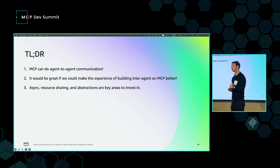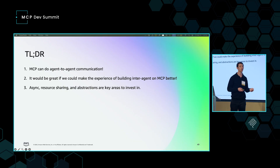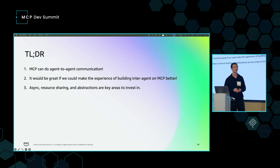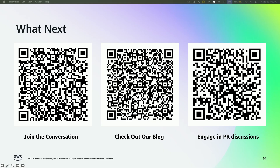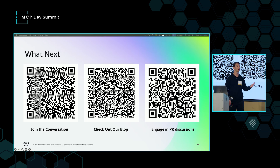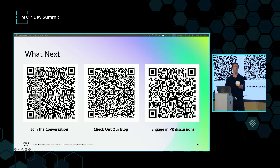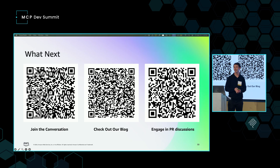TLDR: MCP can do agent-to-agent communication. It would be great if it gets a little better — there are definitely things we can improve, like async, resource sharing, and better abstractions. I highly recommend you try standing up agents on MCP today. There are a few QR codes linked here: one to join our Discord where we're having active discussion about these topics, another to check out a blog that myself, Mark, and Swami put out recently about this topic, and a third to the PR page on GitHub. There are a ton of PRs out there and the maintainers don't have time to review all of them rapidly, so to the extent that you all can comment on PRs, contribute to PRs, or even create your own, that will be really useful. Thank you.